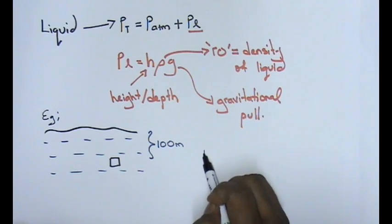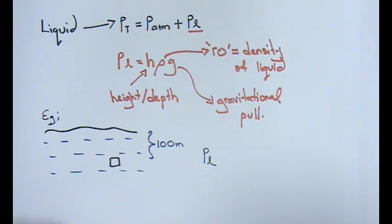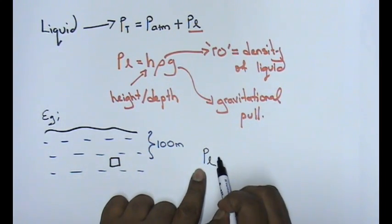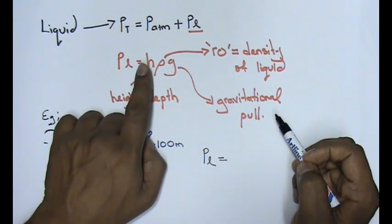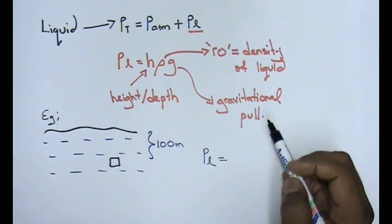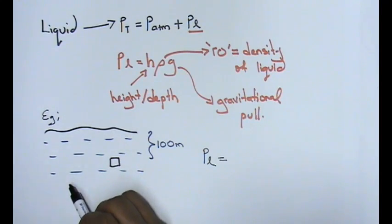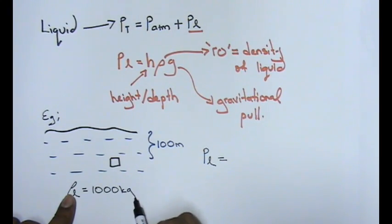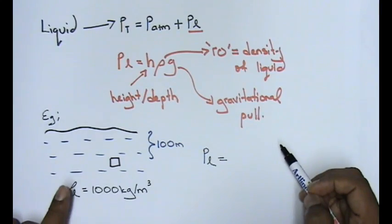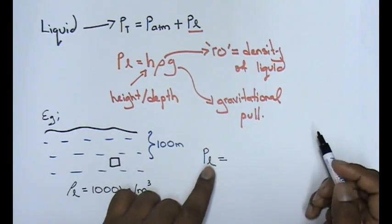Now to calculate the liquid pressure, what I need you to do is use this formula. And also given to you that the liquid density here is 1,000 kilograms per meter cube. This is the liquid density.